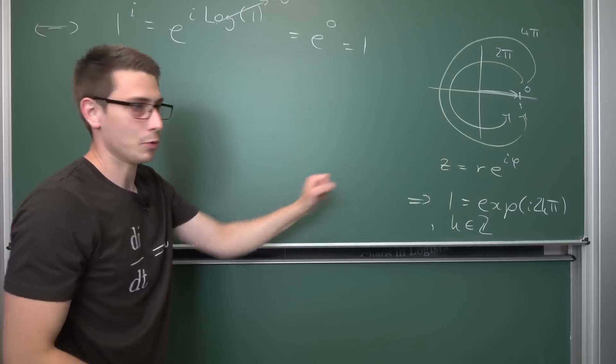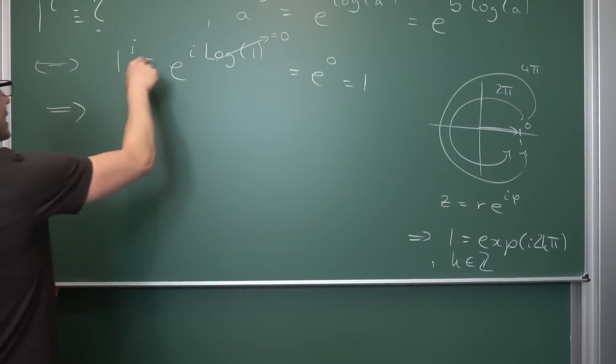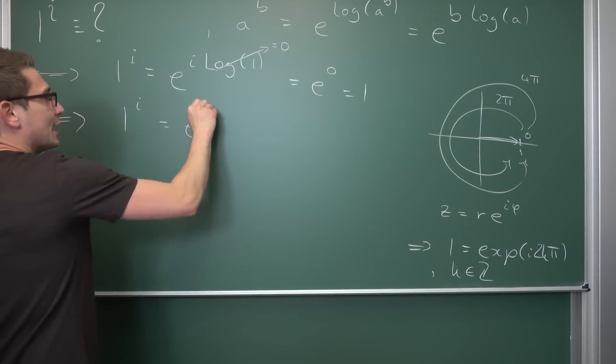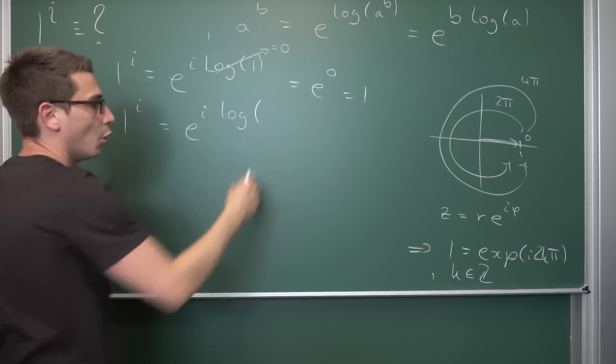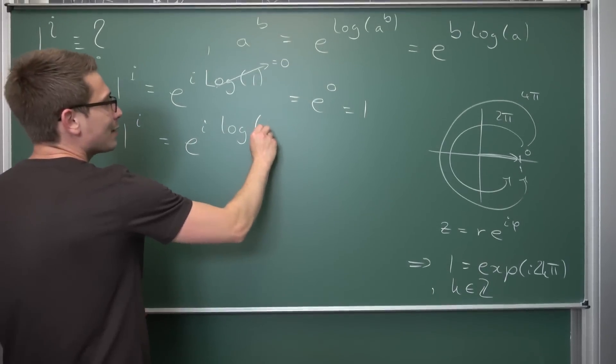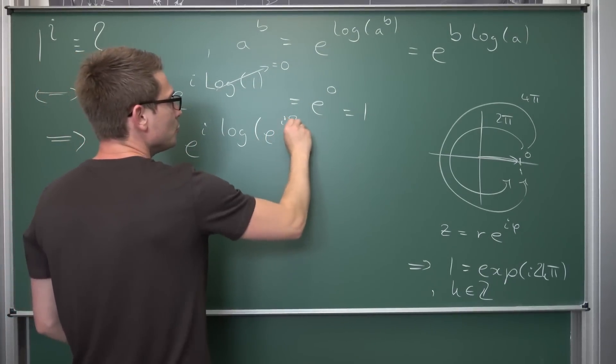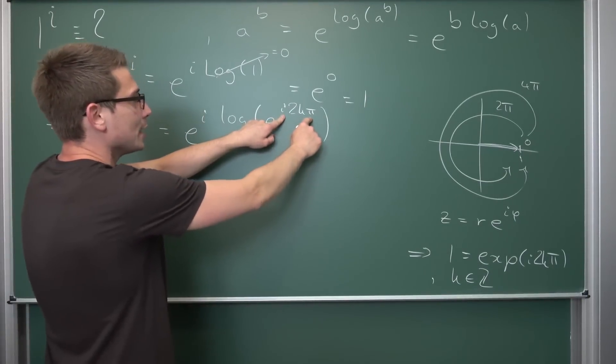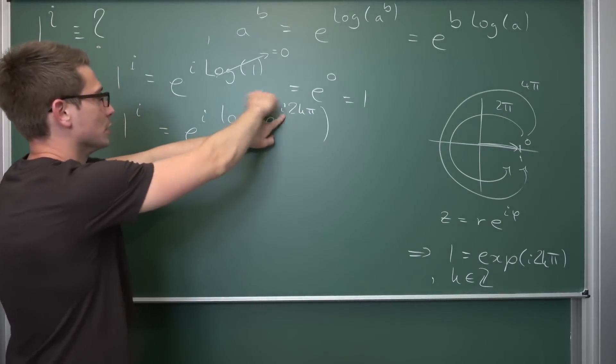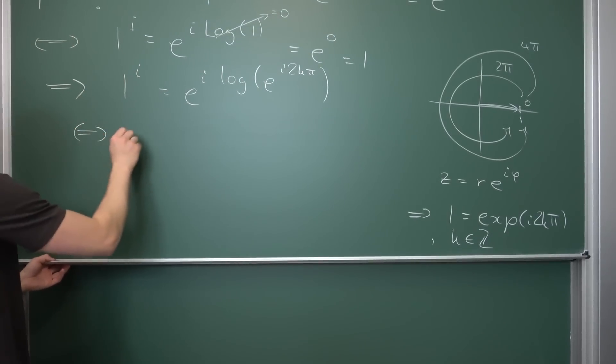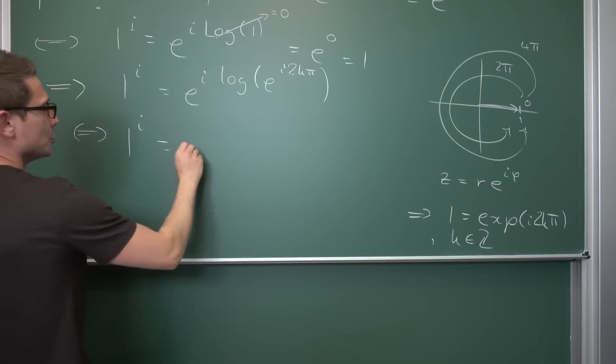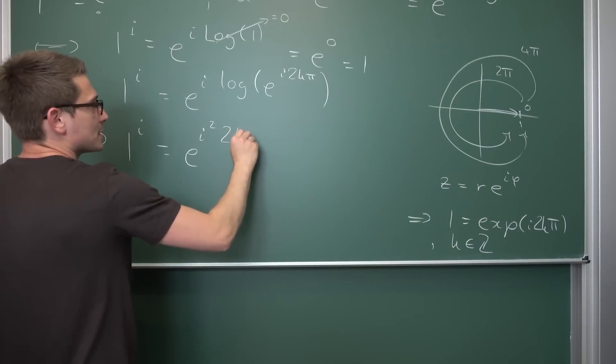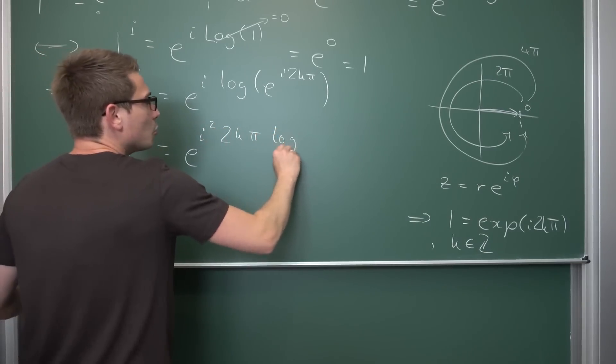Meaning, overall, if we express our number 1 like this, what we are going to get is that 1 to the i-th power is also, on the other hand, e to the i times the logarithm of, and now we are going to put our new definition in, namely e to the i and then 2kπ. Now, by logarithm rules, we can track our i times 2kπ to the front, leaving us with 1 to the i-th power being equal to e to the i and then we get another i, meaning i squared, times 2 times k times π times the logarithm of e.